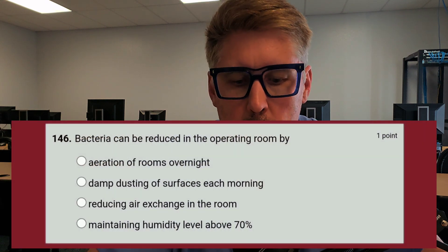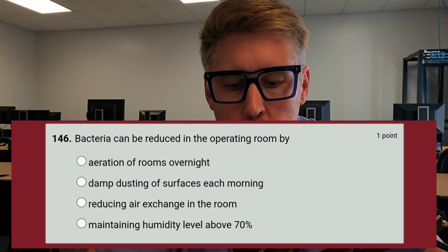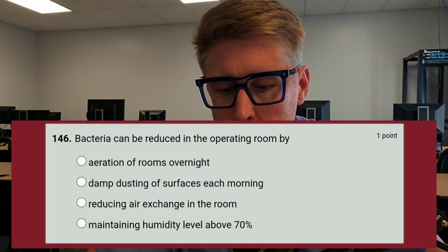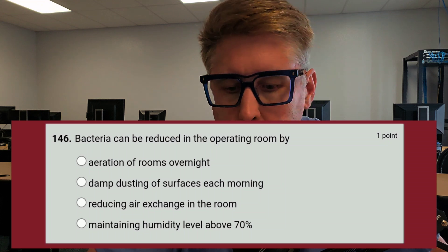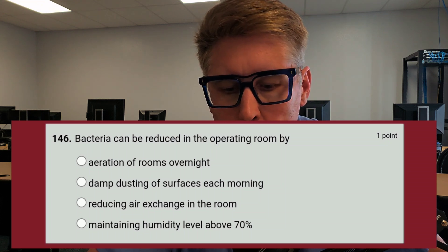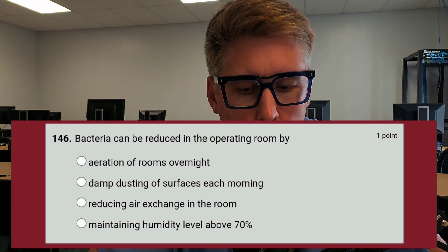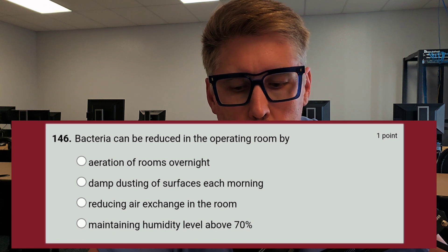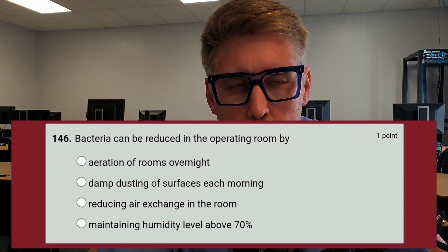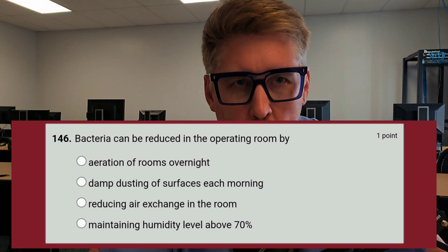We're going to jump right into that first question. Bacteria can be reduced in the operating room by: A, aeration overnight; B, damp dusting of surfaces each morning; C, reducing air exchange in the room; or D, maintaining humidity levels above 70%. Look at that question, look at the answers — you probably know it. Go ahead and put it in the comments section and we're going to move on to question two.